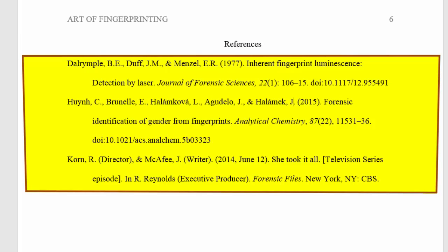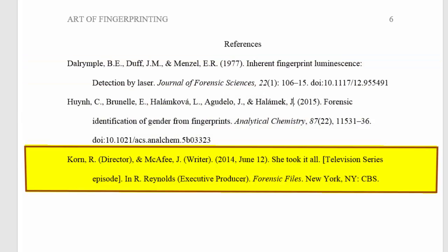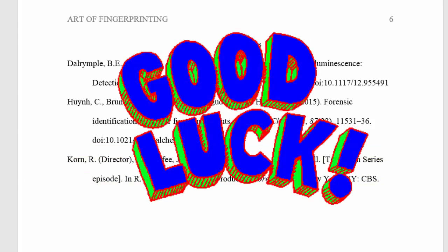Then put your reference citations in alphabetical order and in APA style, and we'll be giving you help on that in a later thread. Now, keep in mind that the source of your real-life crime case does not count as one of your two required outside references. However, you still must cite the source from which you got the real crime case. Okay, good luck on your forensic sciences discipline paper.